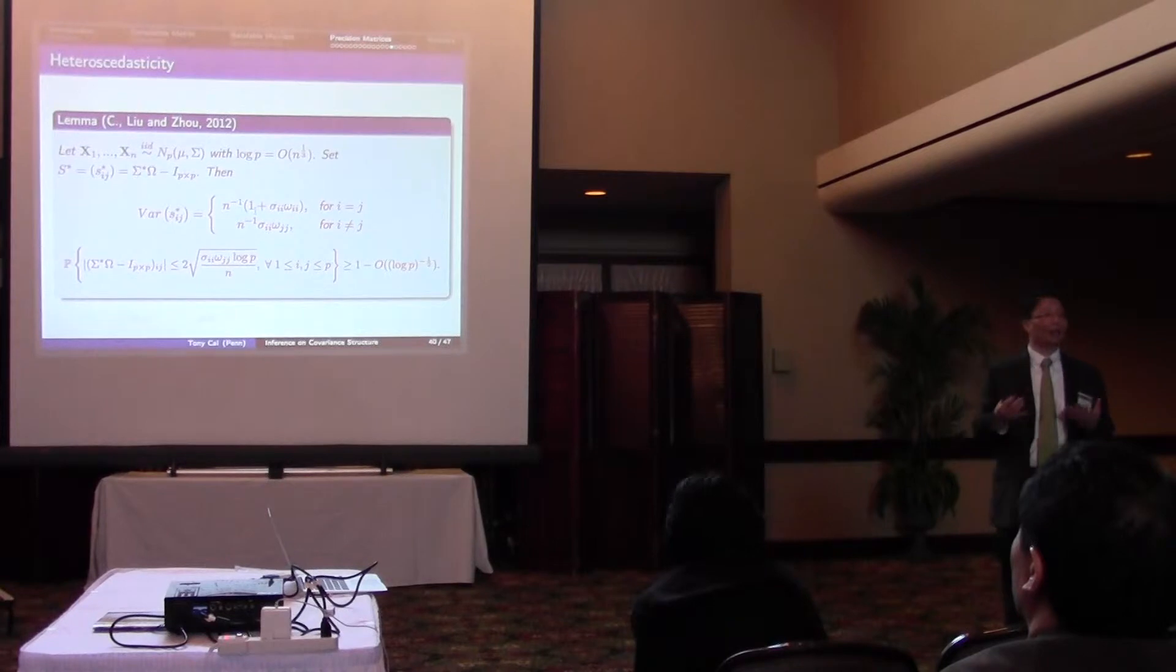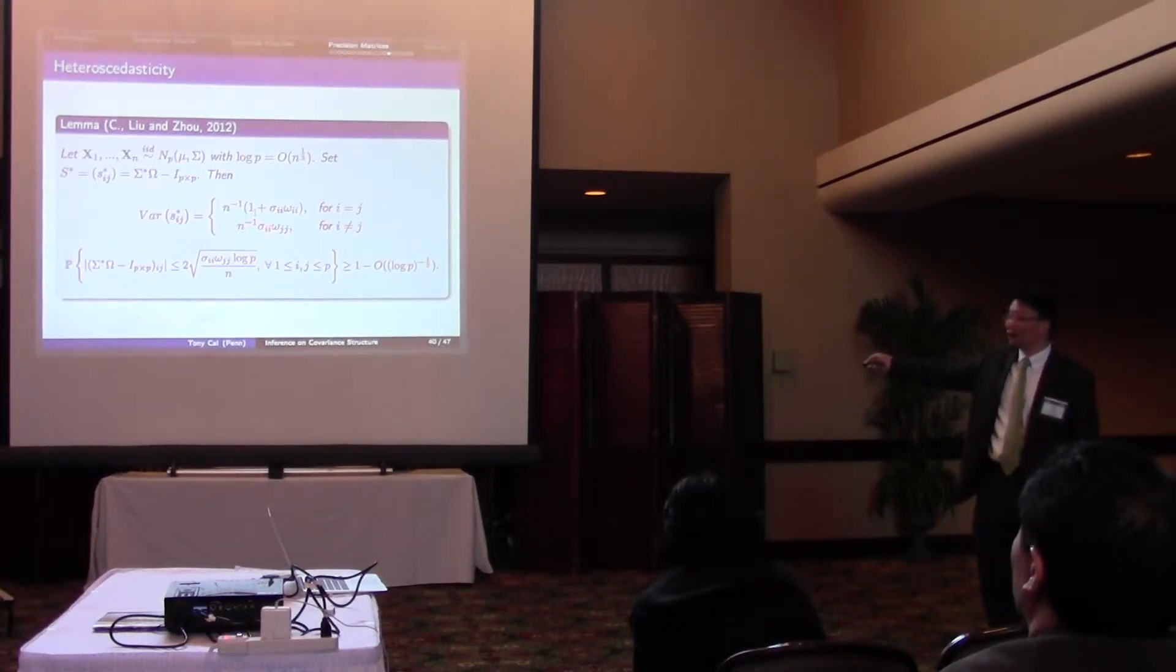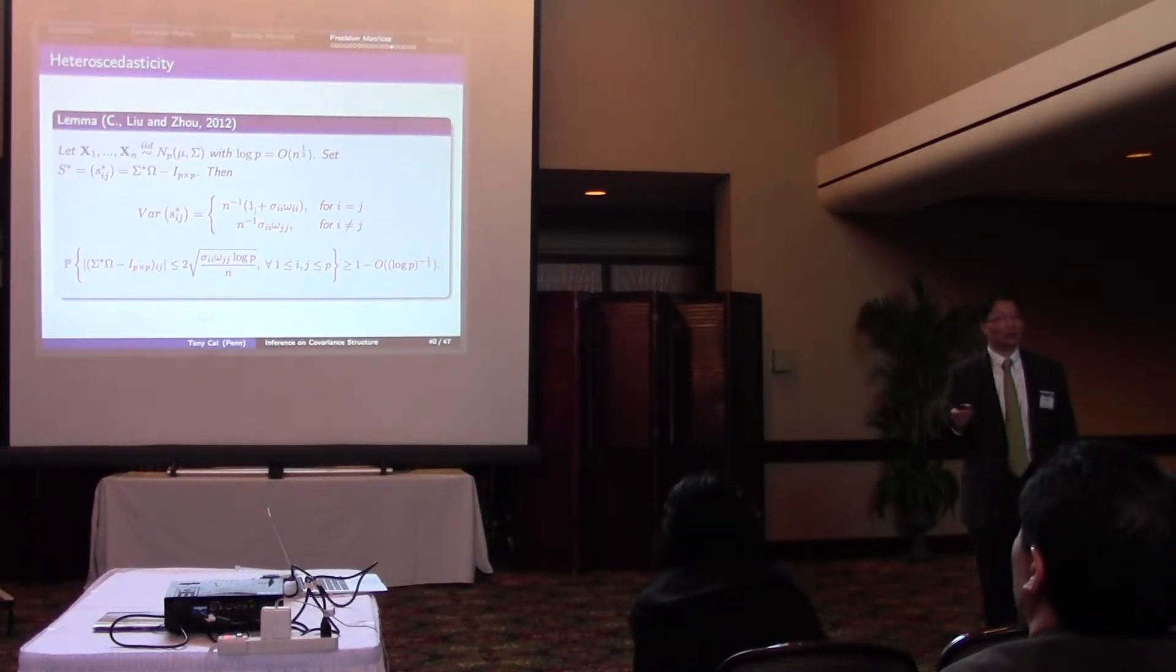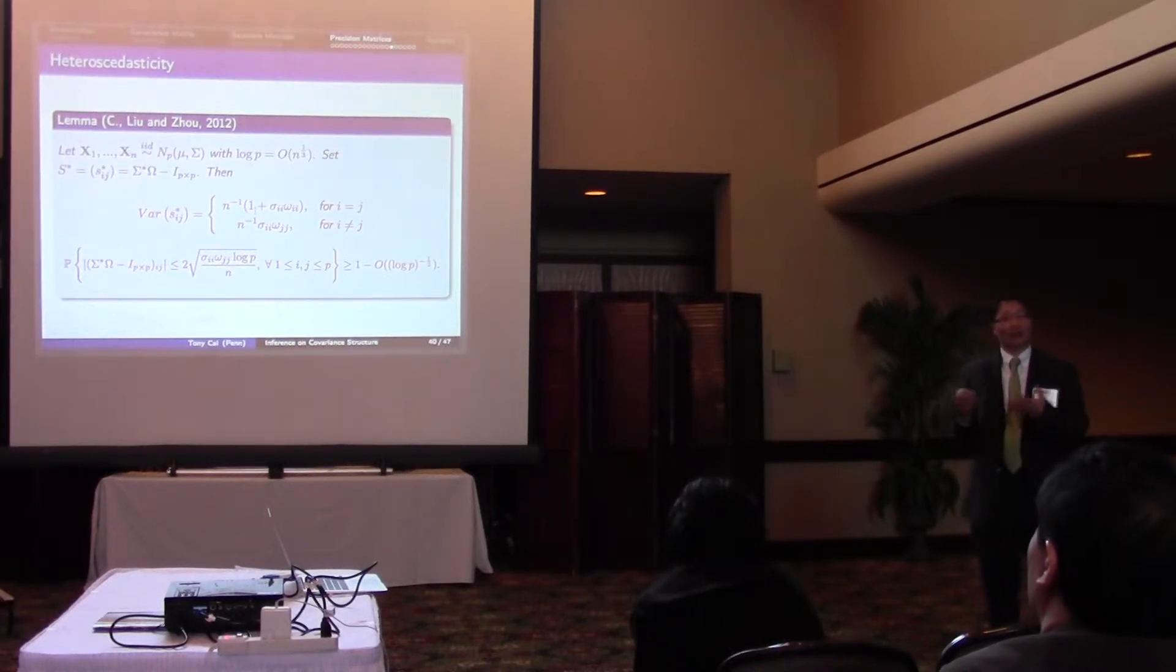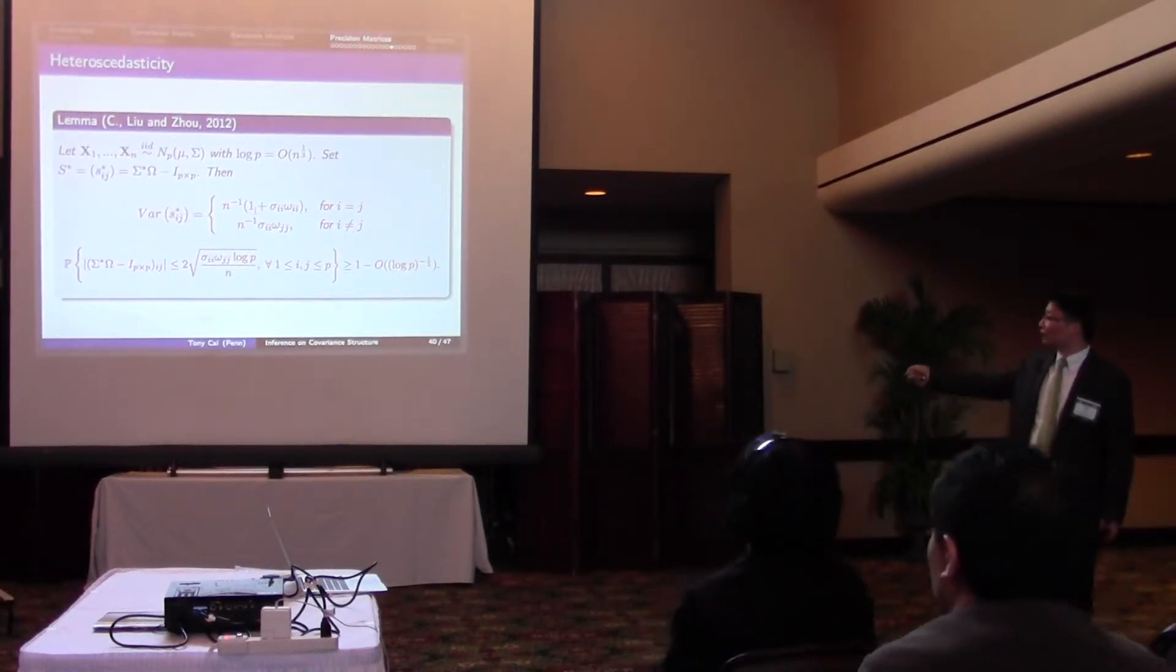But those, of course, are unknown. But sigma ii is relatively easy to estimate because we have the sample covariance matrix to begin with. And this omega jj is tough because we want to estimate omega and we don't know anything about omega.